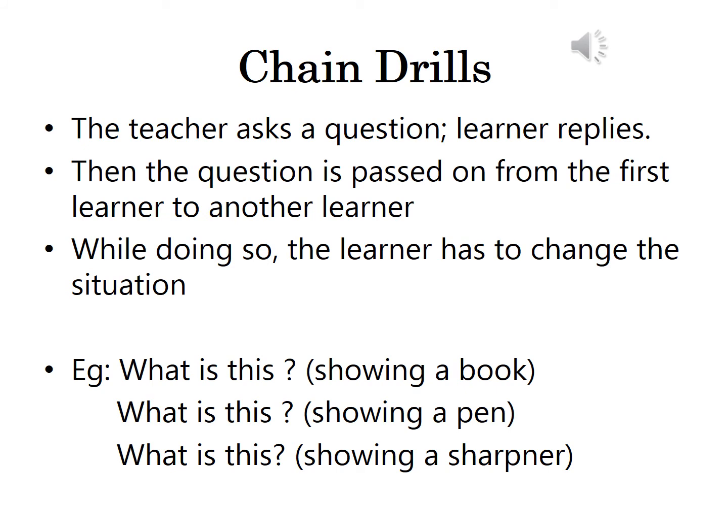In chain drill, the teacher asks a question and the learner replies. Then the question is passed on from the first learner to another learner, and while doing so, the learner has to change the situation. For example, the teacher might show a book to the first student and ask 'What is this?' That first student should then ask the same question by showing another object — say a pen — to the second student sitting next to him: 'What is this?' Again, this question is passed from one learner to another by changing the situation, so the third person replies and then asks 'What is this?' by showing a sharpener. This is an example of chain drill.